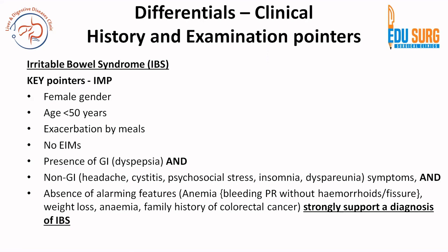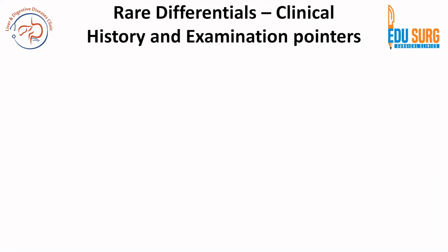IBS does not have extra-intestinal manifestations, but it has GI symptoms such as dyspepsia, diarrhea, and constipation along with non-GI symptoms such as psychosocial stress and dyspareunia. There is also associated absence of alarming features such as anaemia, weight loss, and family history of colorectal cancer. If you can identify this entire spectrum, the patient more commonly has irritable bowel syndrome. It is usually a diagnosis of exclusion — once you have ruled out all differential diagnoses including IBD, you can label the patient as IBS.